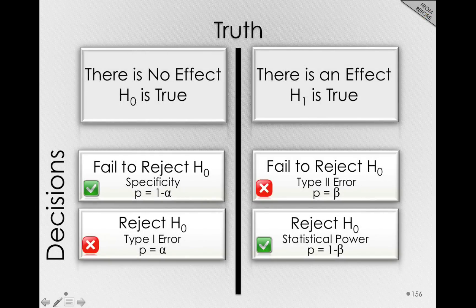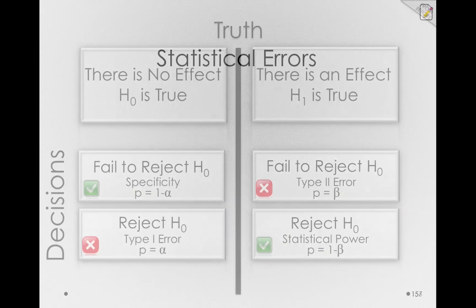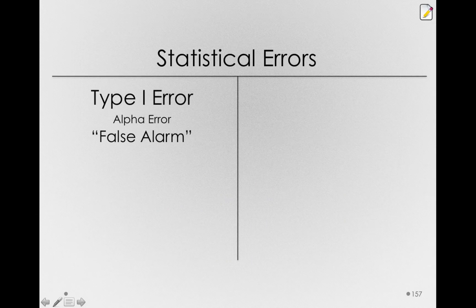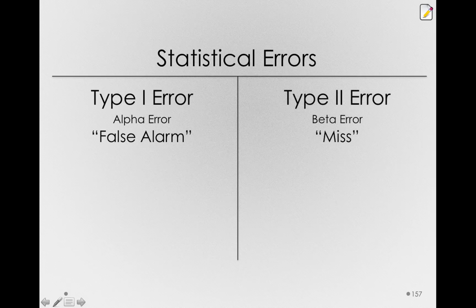Remember that we are either on one side of truth in the world — either there is no effect or there is an effect — and we have to think about the consequences of the decisions we make. Thinking about the statistical errors, I want to give you one diagram that just helps us lay this out. A false alarm is an alpha error, and a type 2 error is a beta error.